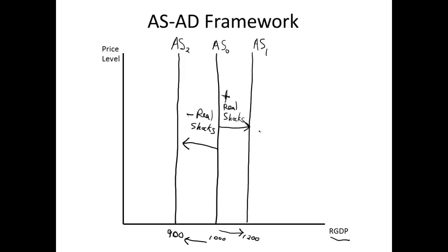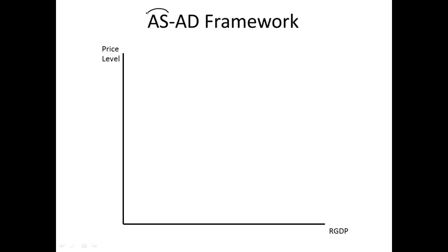This is all you need to know as far as the graph is concerned. You might be thinking: you said aggregate supply and aggregate demand — where is aggregate demand? I'll show you — not because it matters in real business cycle theory. The only thing that matters in RBC is aggregate supply. RBC is what we would call a supply-side theory. This is important because when we start talking about Keynesian theory, that's going to be a demand-side theory.